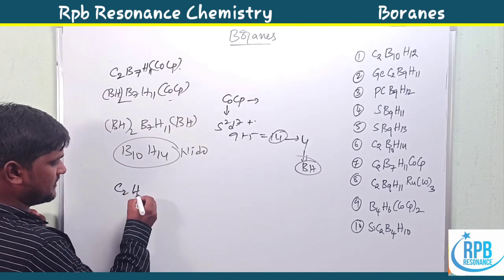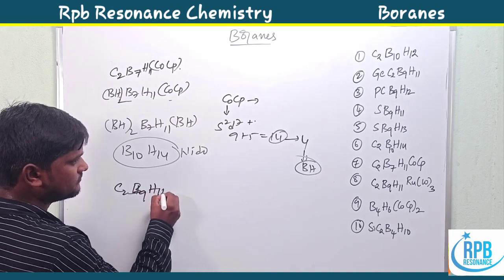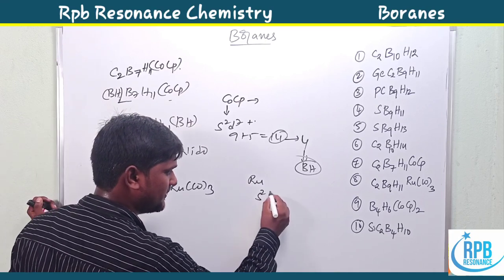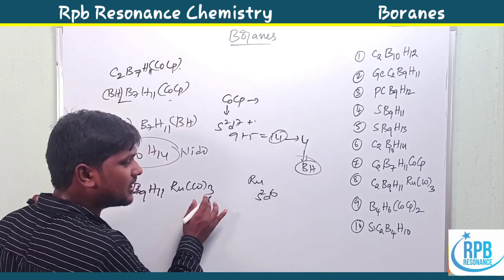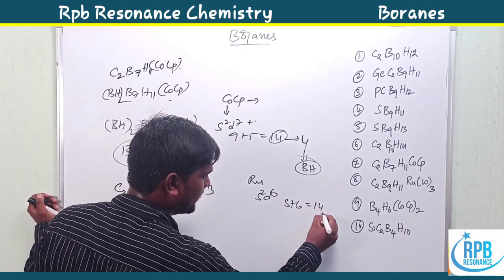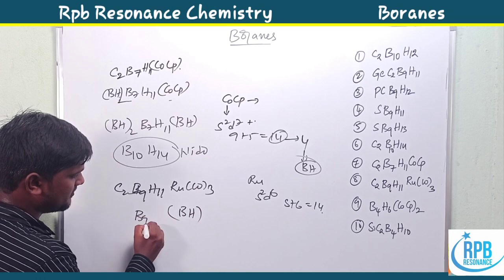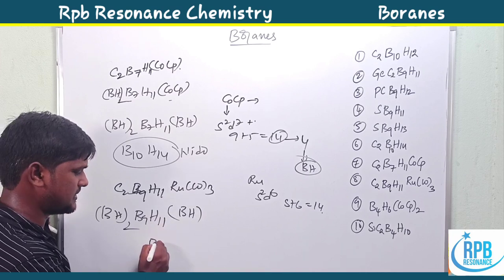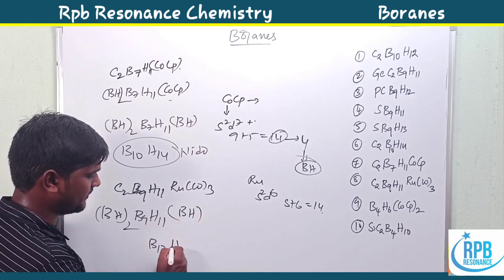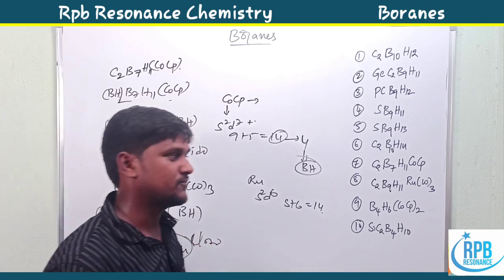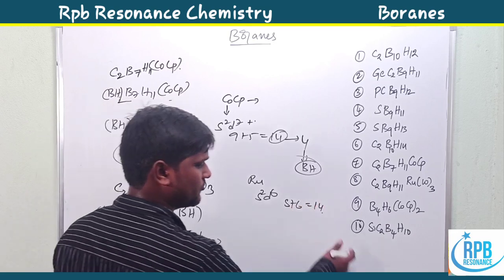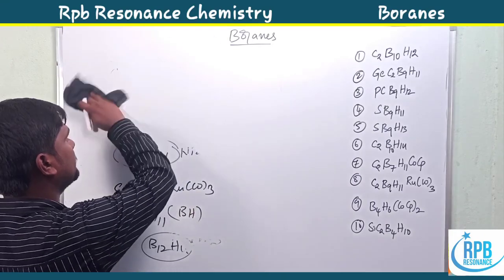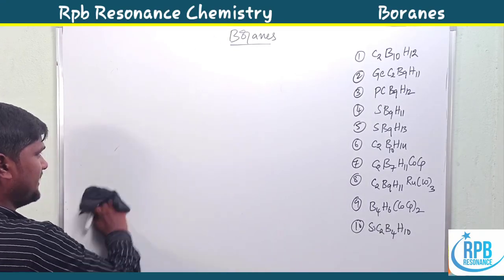For C2B9H11 with Ru(CO)3: ruthenium is iron family (d6s2 = 8 electrons), three carbonyls contribute 6 electrons, total = 14 electrons — equivalent to BH. Two carbons give 2 BH units. So total = 1+2+9 = 12 boron equivalents, 1+2+11 = 14 hydrogens, giving B12H14 — closo type. The remaining examples are left for self-study.